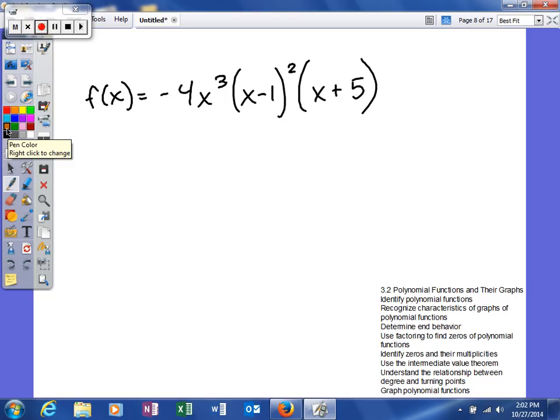The leading coefficient isn't going to be that bad. To find our leading coefficient in a problem like this, just like the last one, we look at the term in the front. We're multiplying all those together. So when you do that, you'll have negative four times one times one, or in other words, our leading coefficient will be negative four. The important part is that it is negative.